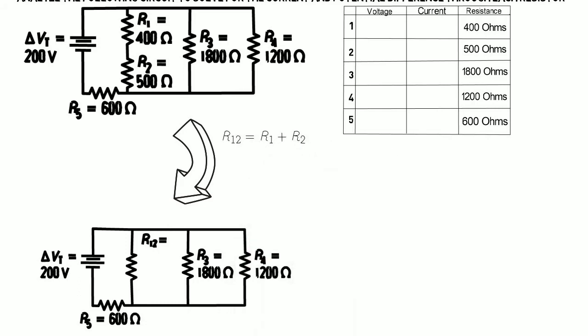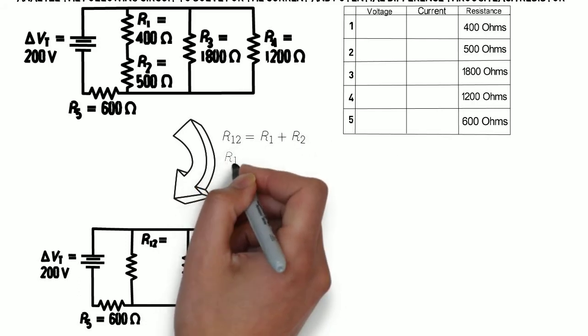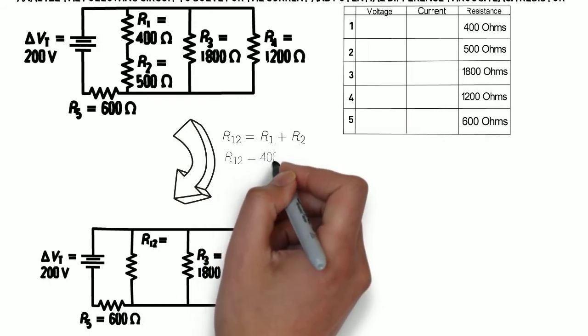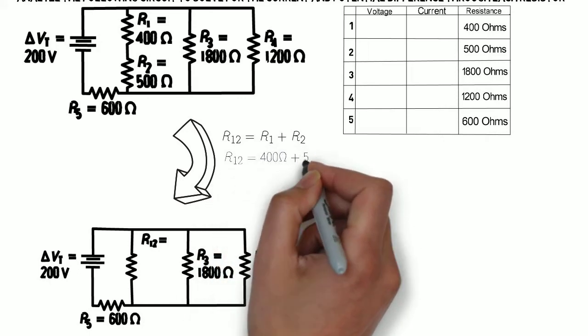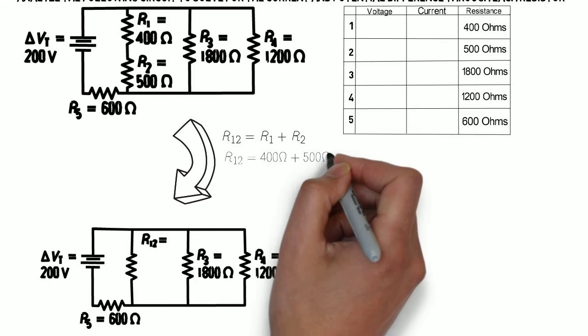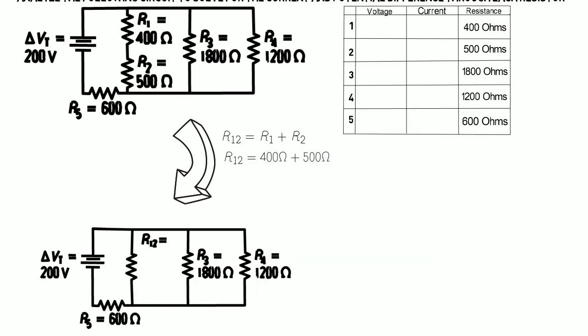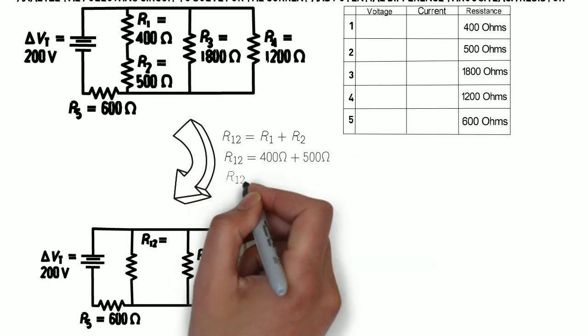Now in series, we do this by simply adding the resistance of the two resistors. So let's call this R12 and we're going to set that equal to R1 plus R2, which gives us a resistance of 900 ohms.